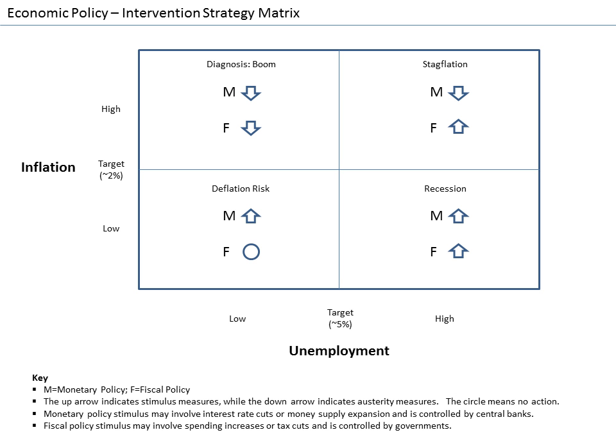Fiscal policy is the use of government's revenue and expenditure as instruments to influence the economy. Examples of such tools are expenditure, taxes, and debt. For example, if the economy is producing less than potential output, government spending can be used to employ idle resources and boost output. Government spending does not have to make up for the entire output gap. There is a multiplier effect that boosts the impact of government spending.